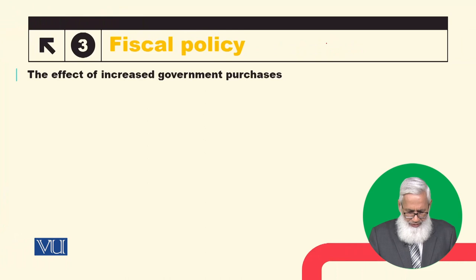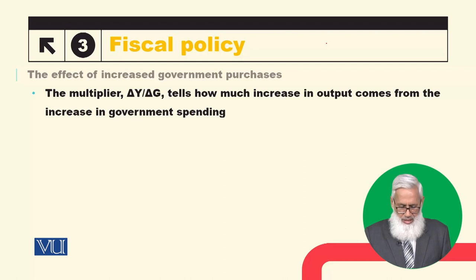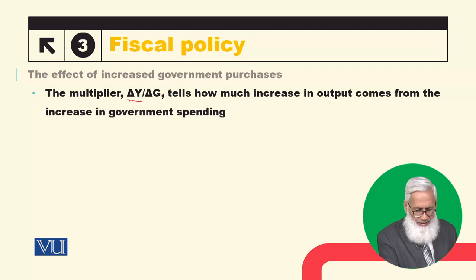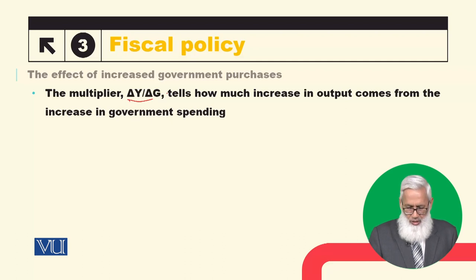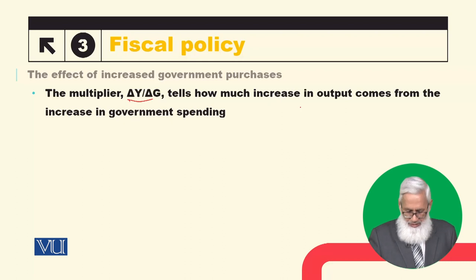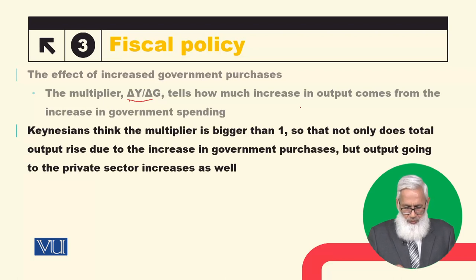Now consider the effect of increased government purchases through the multiplier effect, which you may be familiar with from previous macro courses. The multiplier is delta Y over delta G — how much increase in output comes from an increase in government spending. Keynesians think the multiplier is larger than one, so not only does total output rise due to increased government purchases, but output going to the private sector increases as well.